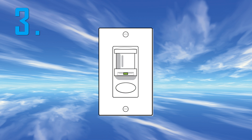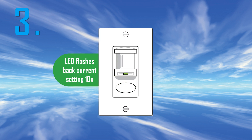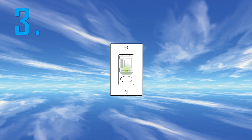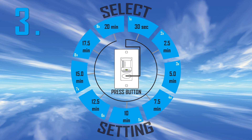Step 3. The LED will flash back the current setting for this function ten times. During this flashback, press the button the number of times corresponding to the setting you'd like to select.